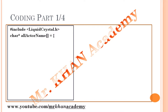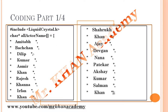The array name is `allActorName`, with data type `char`. In the square brackets I'm not writing any size because I'm initializing it directly. I've chosen 20 actor names randomly: Amitabh, Bachchan, Dilip, Kumar, Amir Khan, Rajesh Khan, Irfan Khan, Charu Khan, Ajay Devgan, Nana Patekar, Akshay Kumar, and Salman Khan. The total size of this array is 20 strings, but the actor names are 10, and the indexing of all actors starts from 0 — Amitabh is index 0, Bachchan is 1, Dilip is 2, and so on, up to index 19.